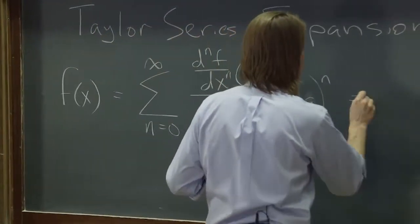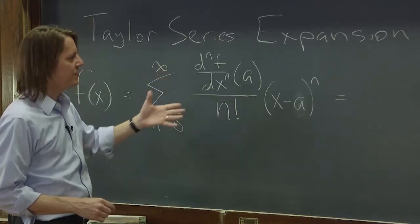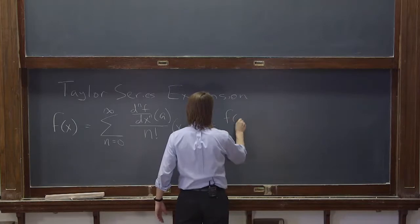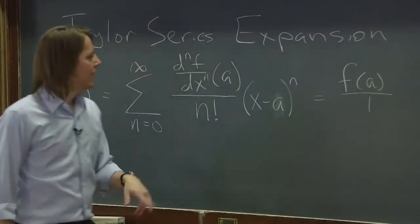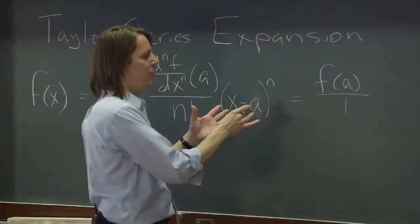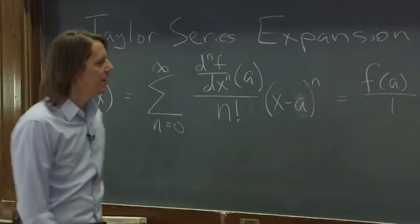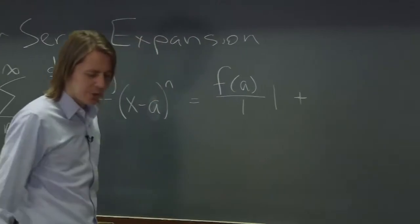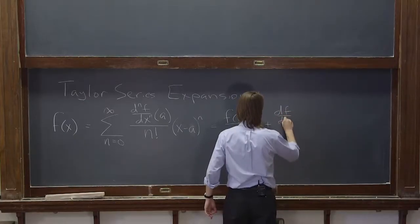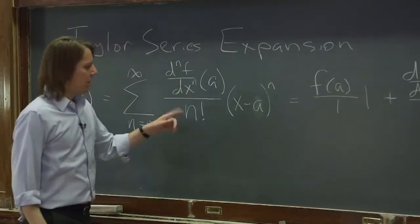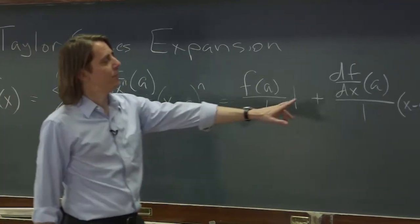Let's write the first few terms explicitly. The 0th derivative just means the function itself, so the first term is the function evaluated at a over 0 factorial, which is 1, times x minus a to the 0, which is also 1. So it's really just the function evaluated at a — just a constant value. The second term is the first derivative df/dx evaluated at a, over 1 factorial, times x minus a to the first power. So now you have a linear term, which is exactly what we're looking for.